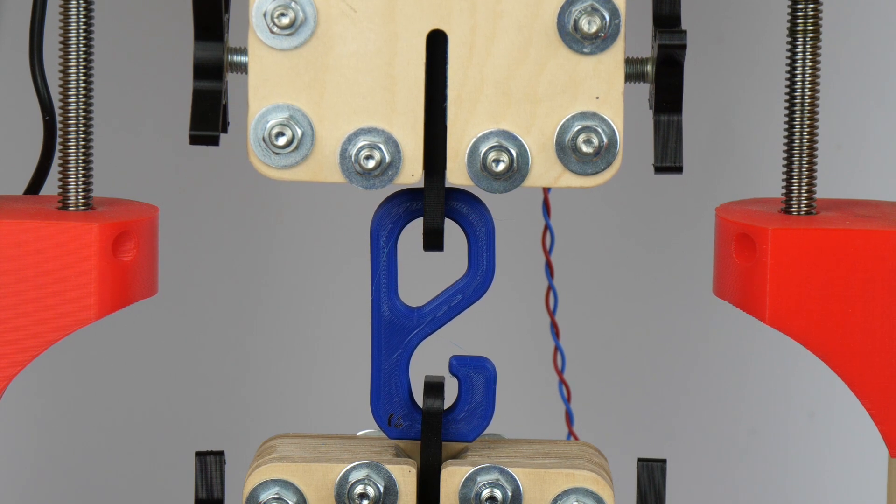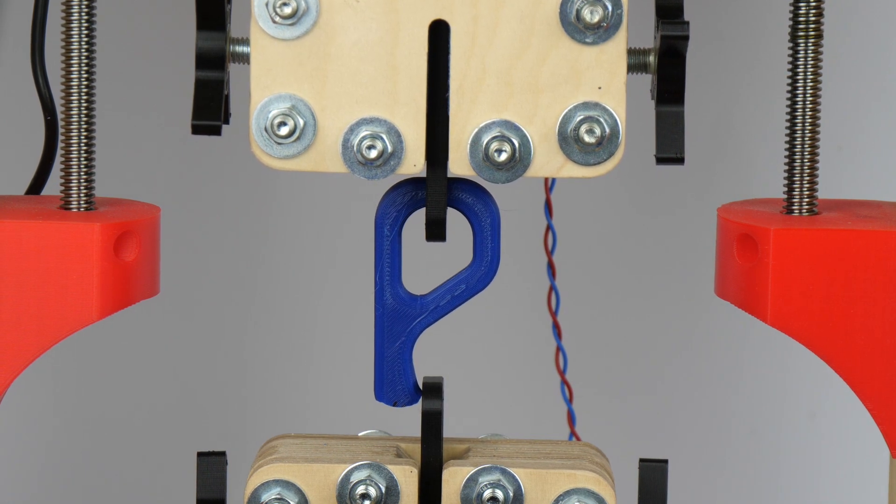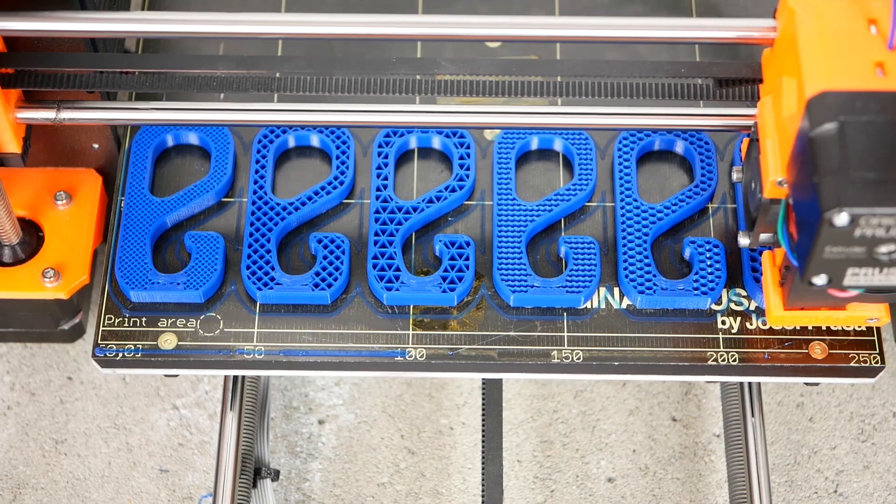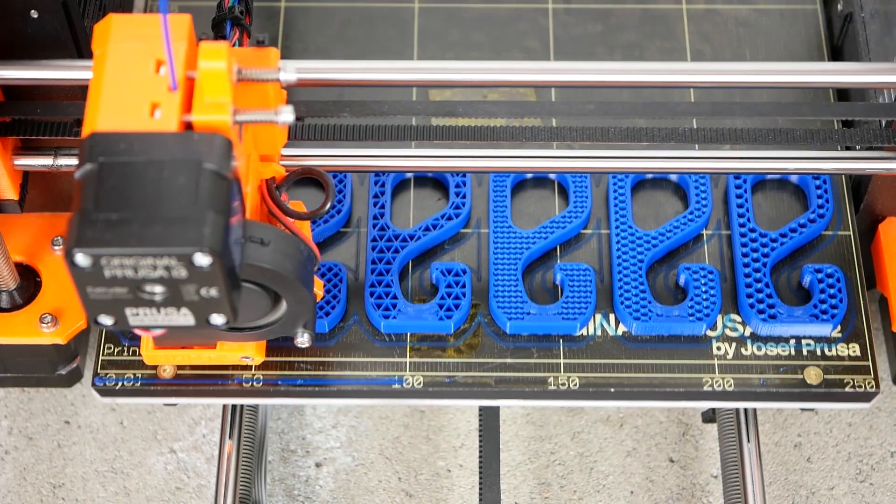But what really gives you the strongest result and which is the most economical way, meaning how can you increase the strength of your part with the least amount of material? If you want to print lightweight structures this is something which is really important.